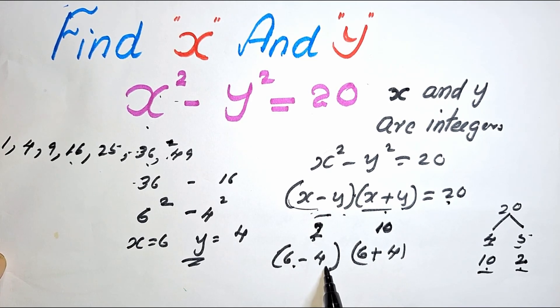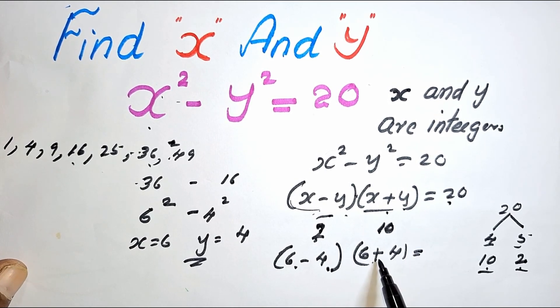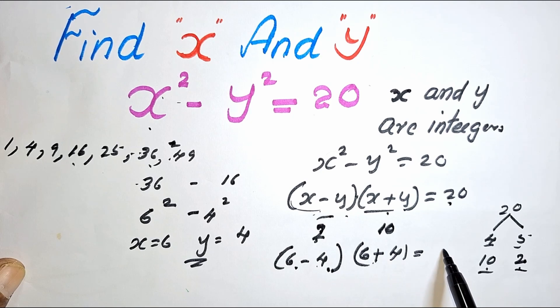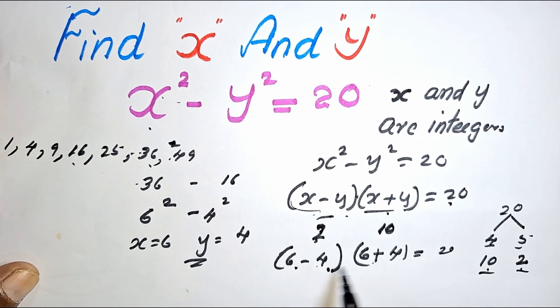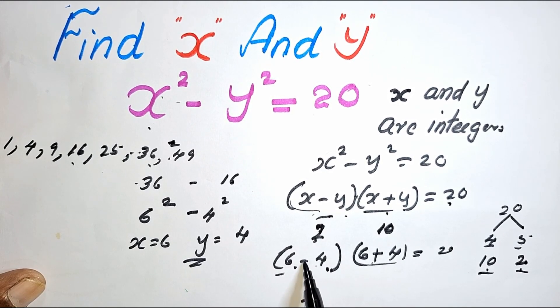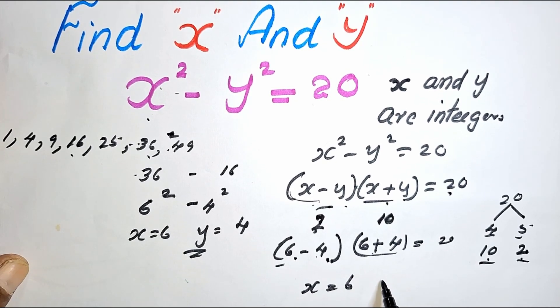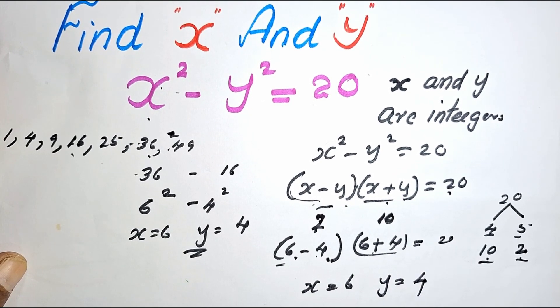So 6 minus 4 is 2, 6 plus 4 is 10. So 2 into 10 is 20. Therefore, with this you can conclude, X is equal to 6 and Y is equal to 4.